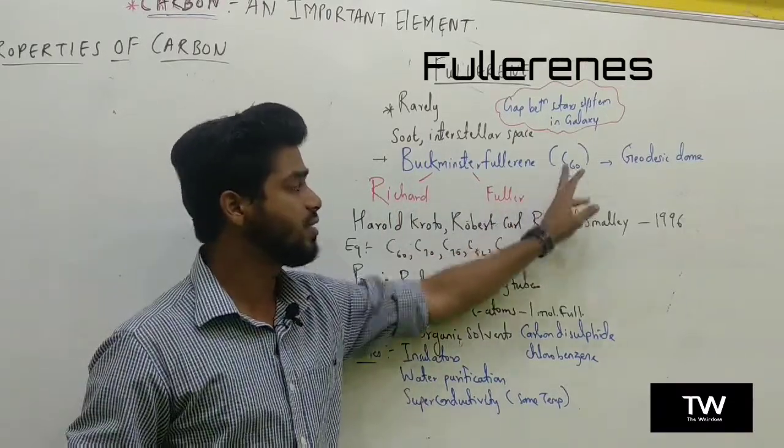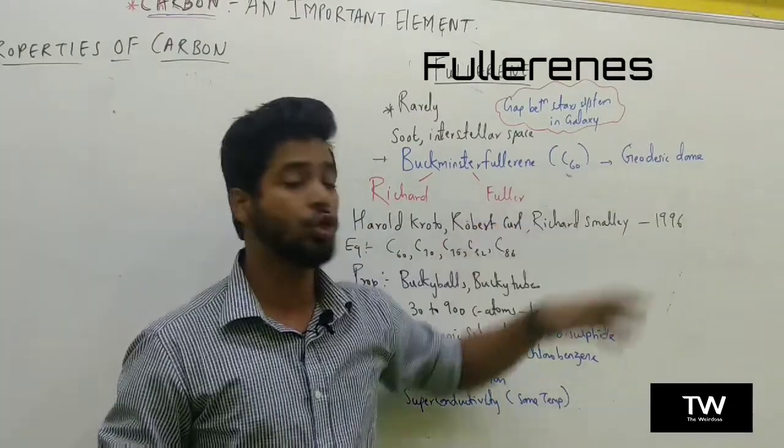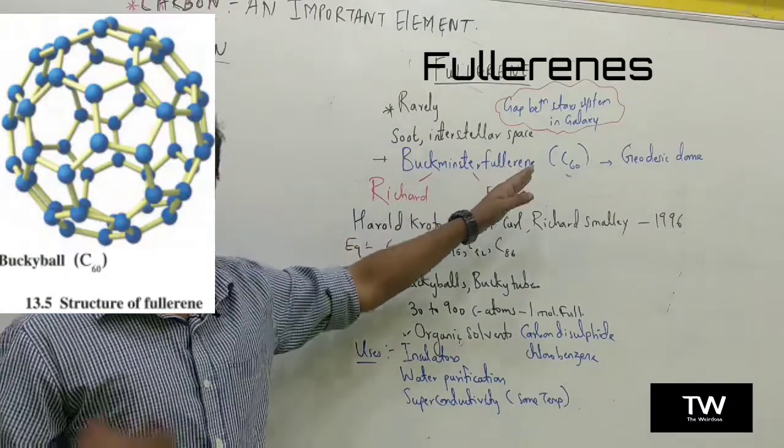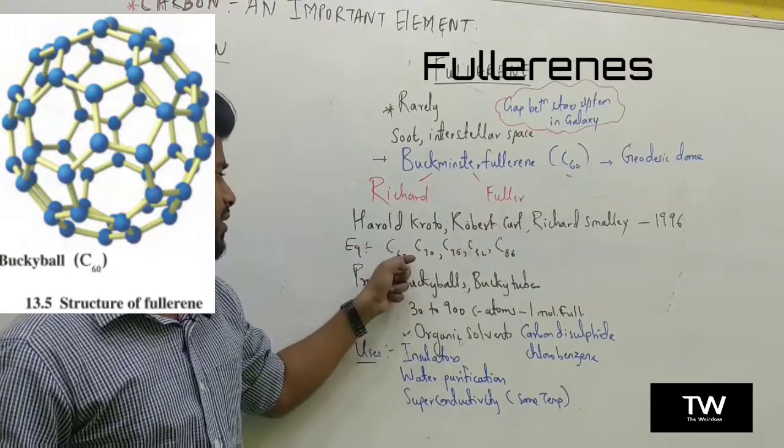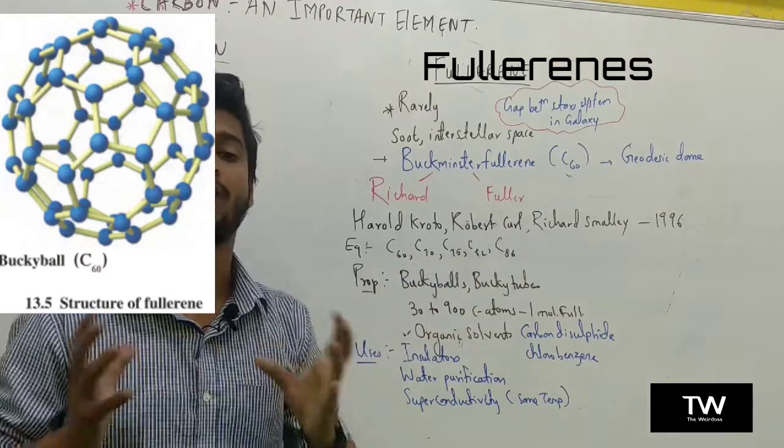C60 has a dome shape which was called a geodesic dome. What is C60? C60, C70, C76, C82, C86, all the number of carbon atoms.